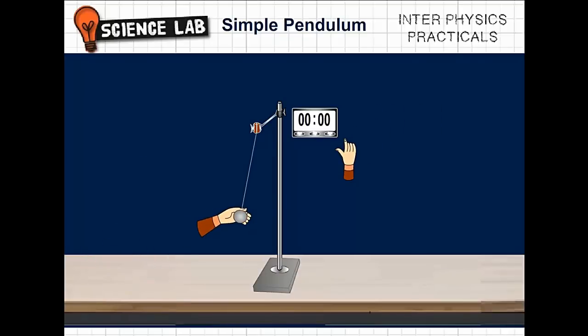Drag the bob aside by a small angle, say 5°, and release it. The bob will start oscillating. Start the stopwatch. Count for 20 oscillations of the pendulum. Stop the stopwatch after 20 oscillations.